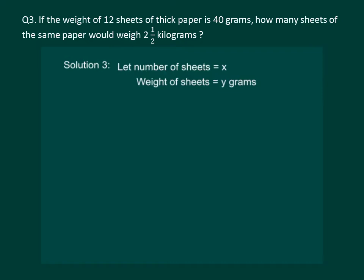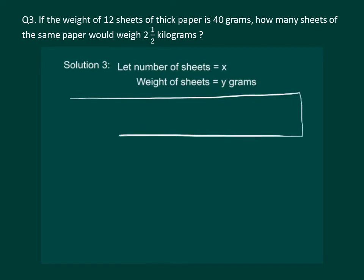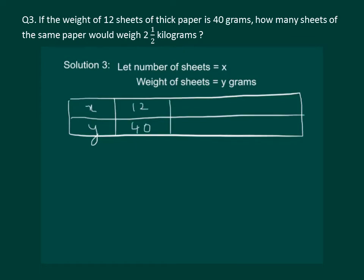Now let us assume that the number of sheets be x and let us denote the weight of the sheets by y grams. Our next step is to construct a table with x and y as variables — that means number of sheets and weight of the sheets as variables. In the question it is given that 12 sheets weigh 40 grams. The weight given is 2.5 kilograms and we have to find the value of x.